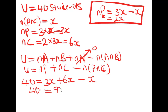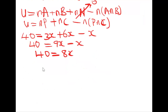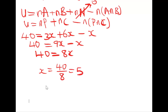Substituting: 3x plus 6x minus x gives 9x minus x, which equals 8x. Setting this equal to 40, we solve for x: 40 divided by 8 gives x equals 5. So the number of students that offer both physics and chemistry is 5.